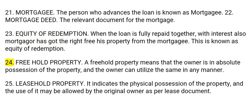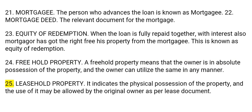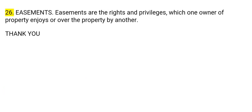24. Freehold property: A freehold property means that the owner is in absolute possession of the property, and the owner can utilize the same in any manner. 25. Leasehold property: It indicates the physical possession of the property, and the use of it may be allowed by the original owner as per the lease document. 26. Easements: Easements are the rights and privileges which one owner of property enjoys over the property of another.